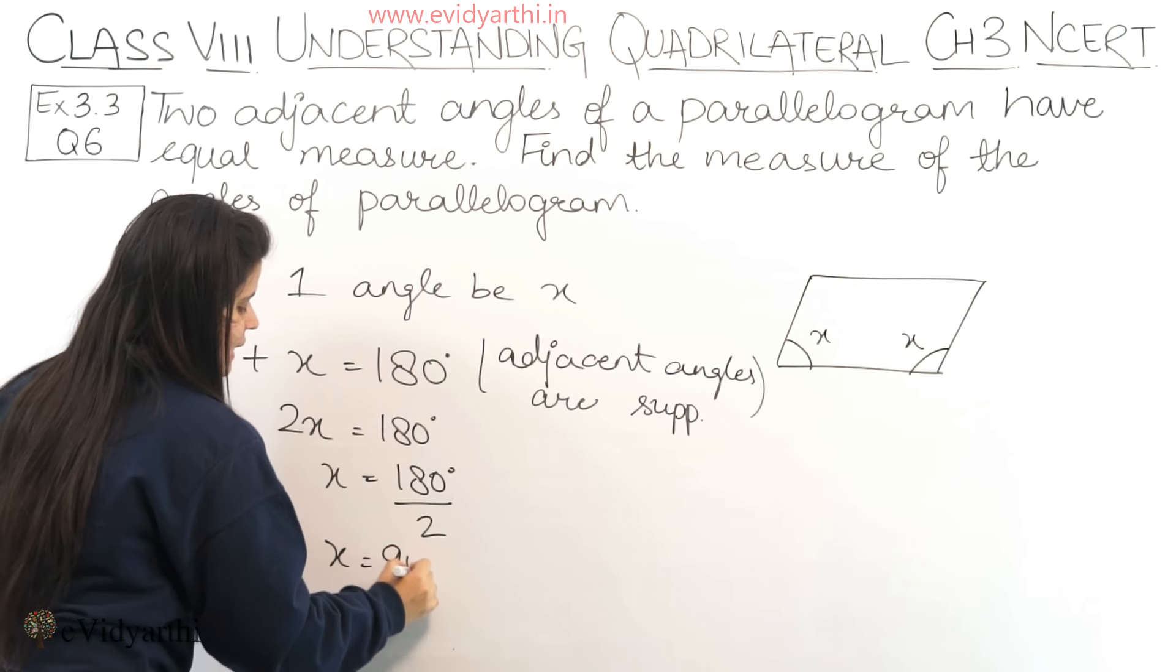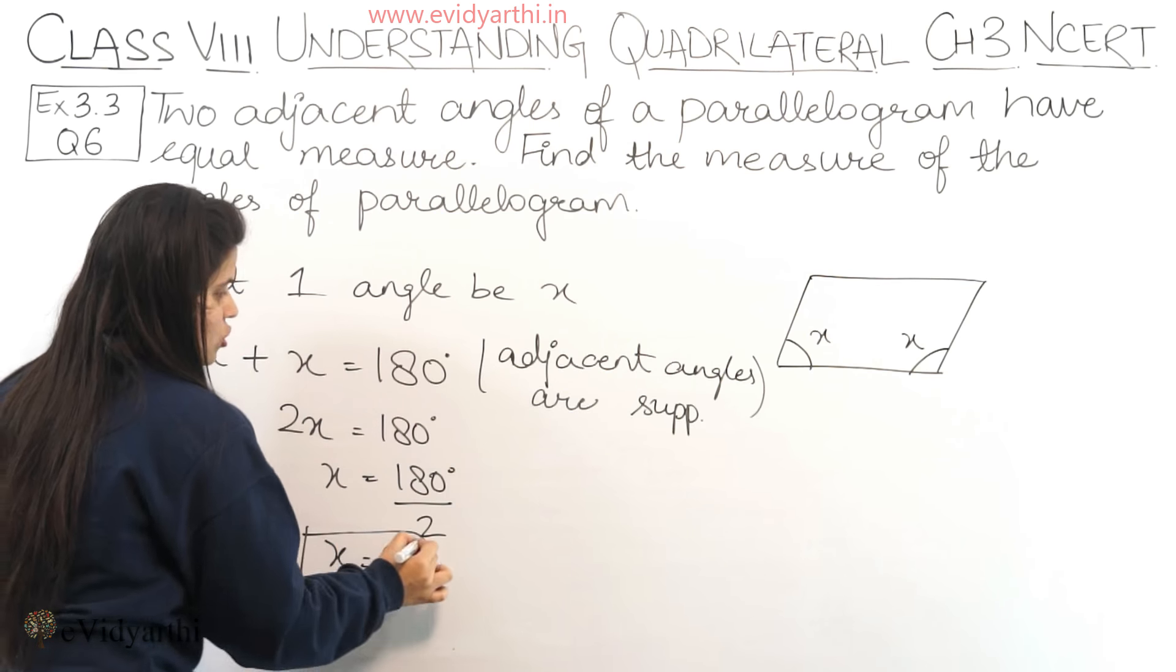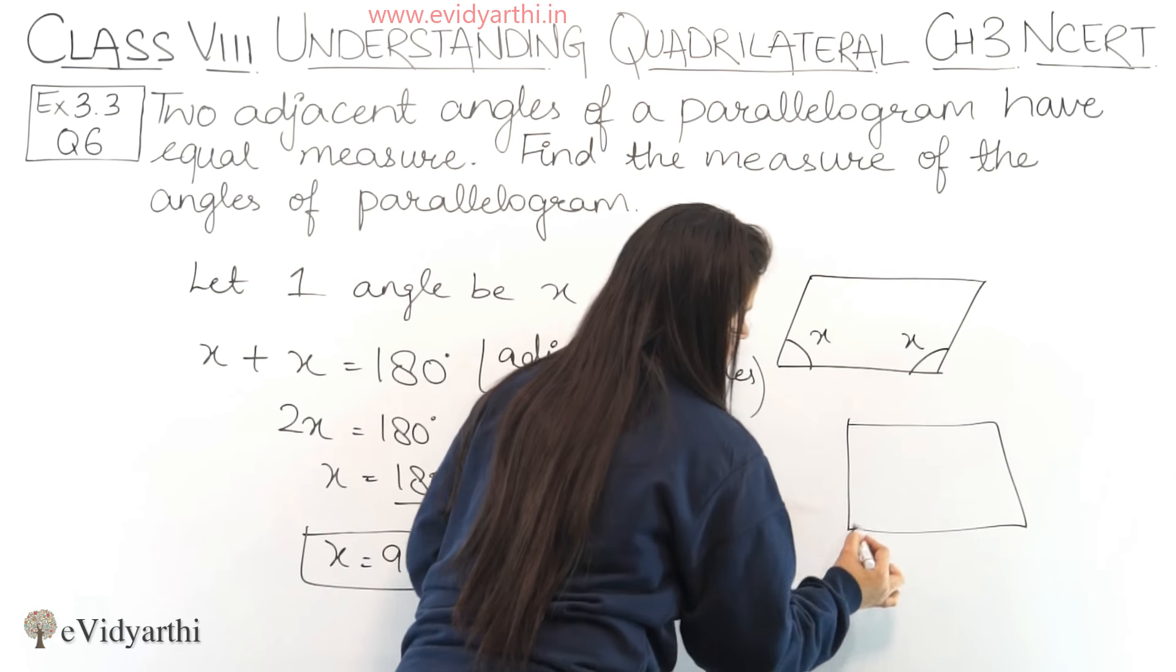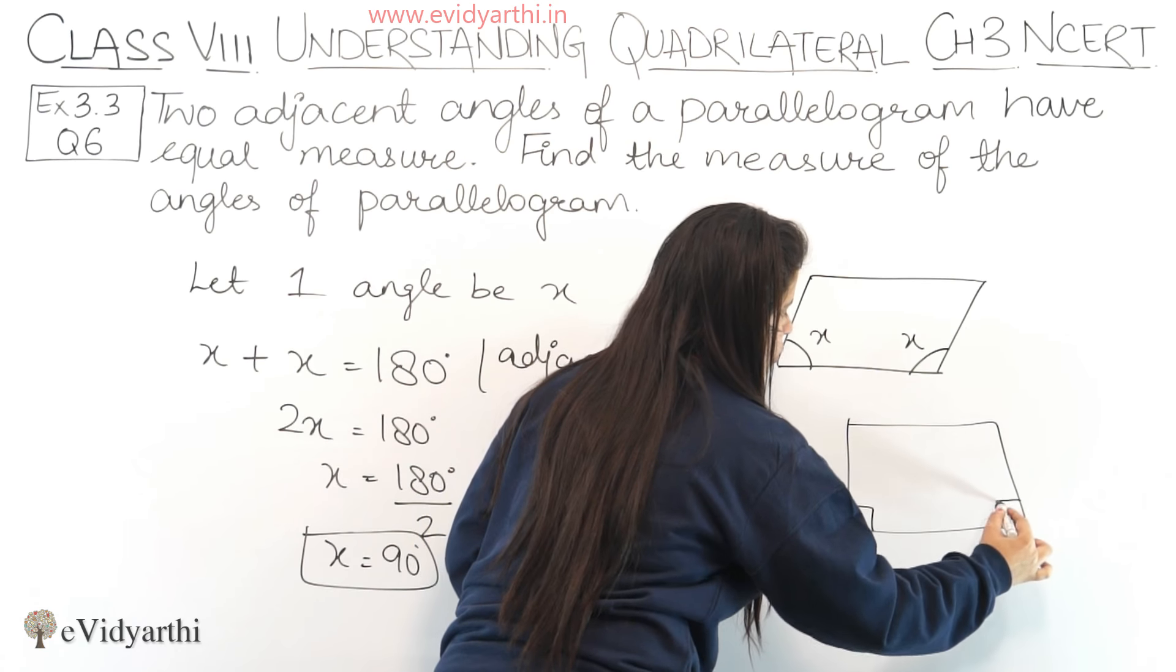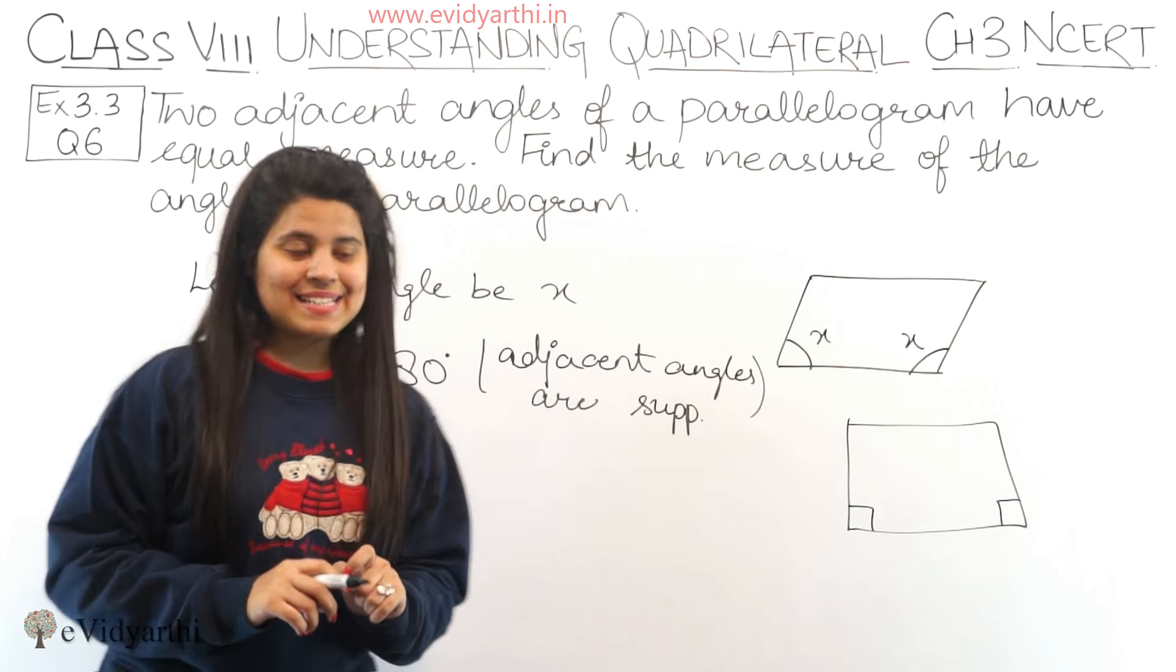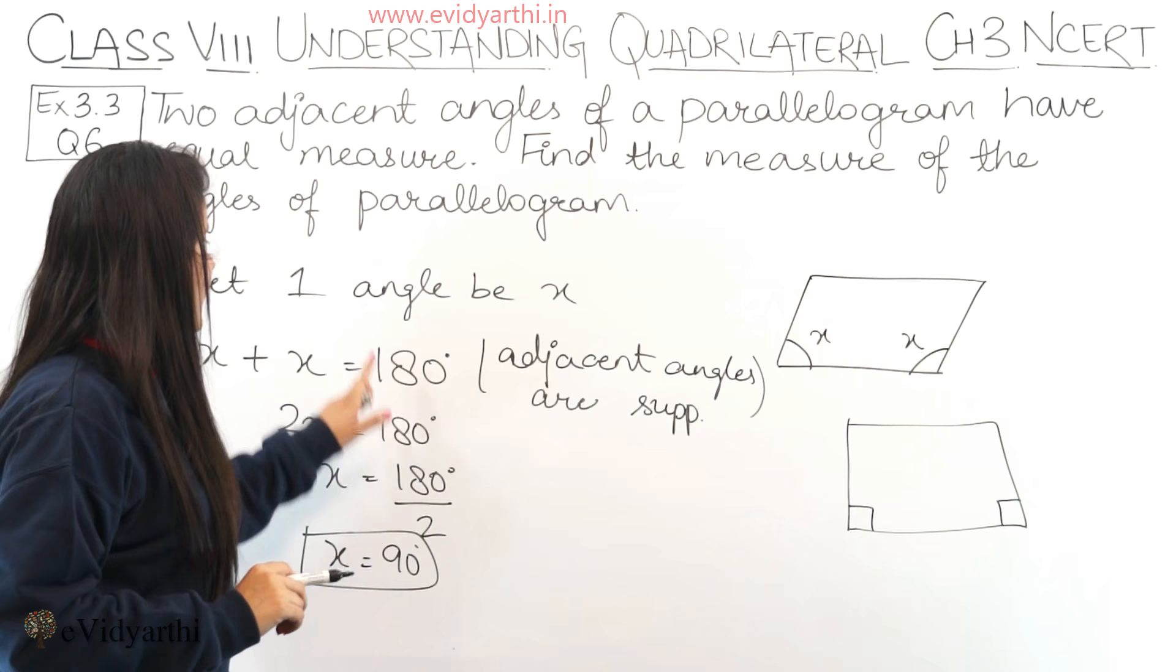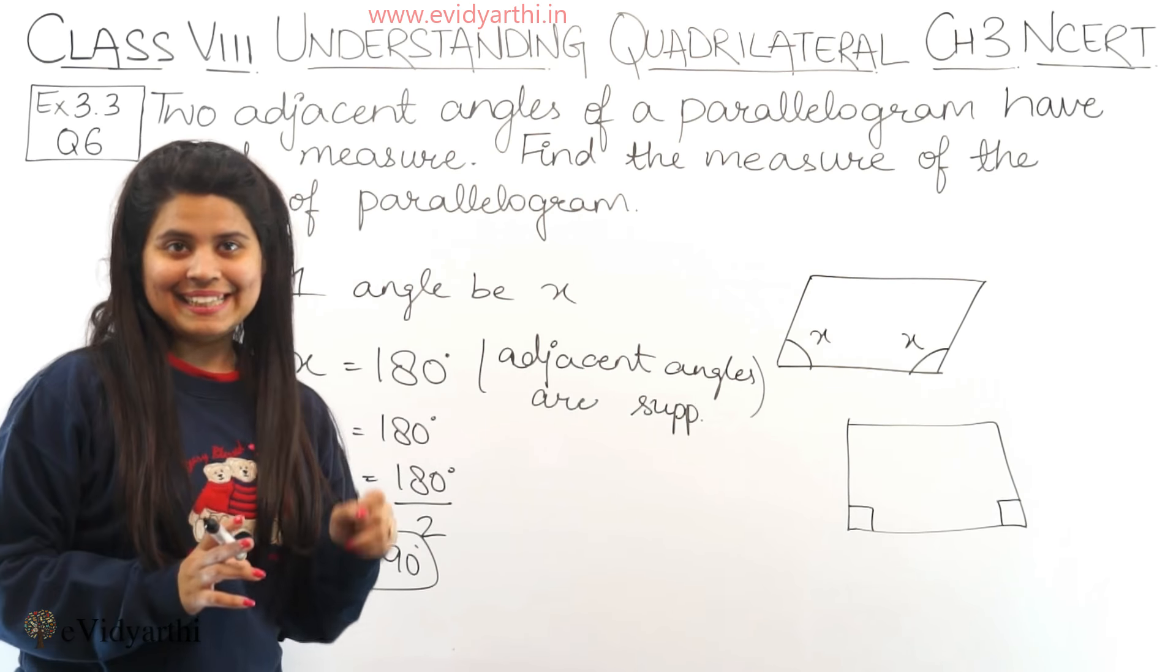So x ki value a jaegi 90 degrees. So this means this figure would be something like this, jahan peh yeh dono 90 degree ke angles hai. So hamare paas x ki value hai 90, matlab dono angles ka measure 90 degrees hai.